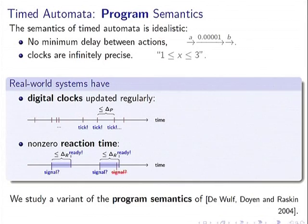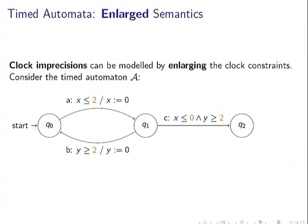The program semantics was defined to take into account these aspects. Think of it as a very concrete semantics — the real-world behavior of some digital system executing the timed automaton. We actually study a variant of this program semantics. These imprecisions in timed automata can also be modeled in a different way.